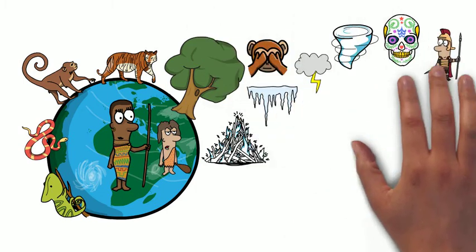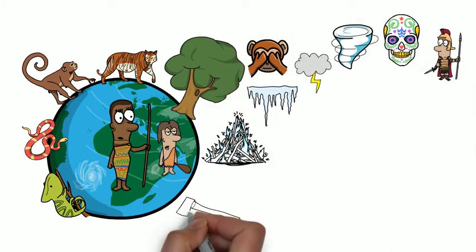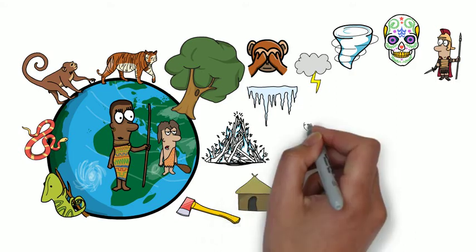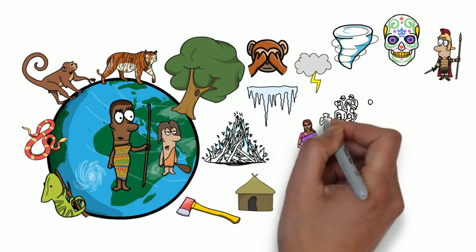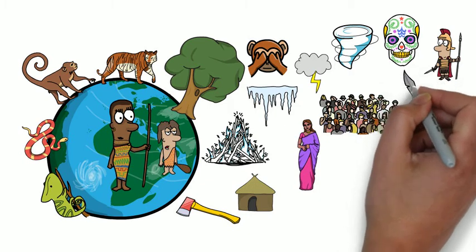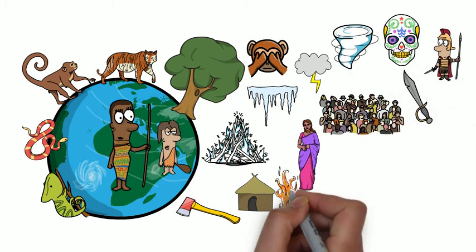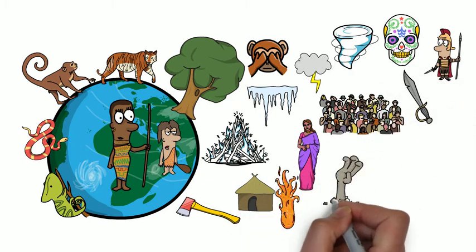The humans were scared by it all. So they devised tools, they built homes, created clothing, formed groups and communities and invented weapons to protect themselves.